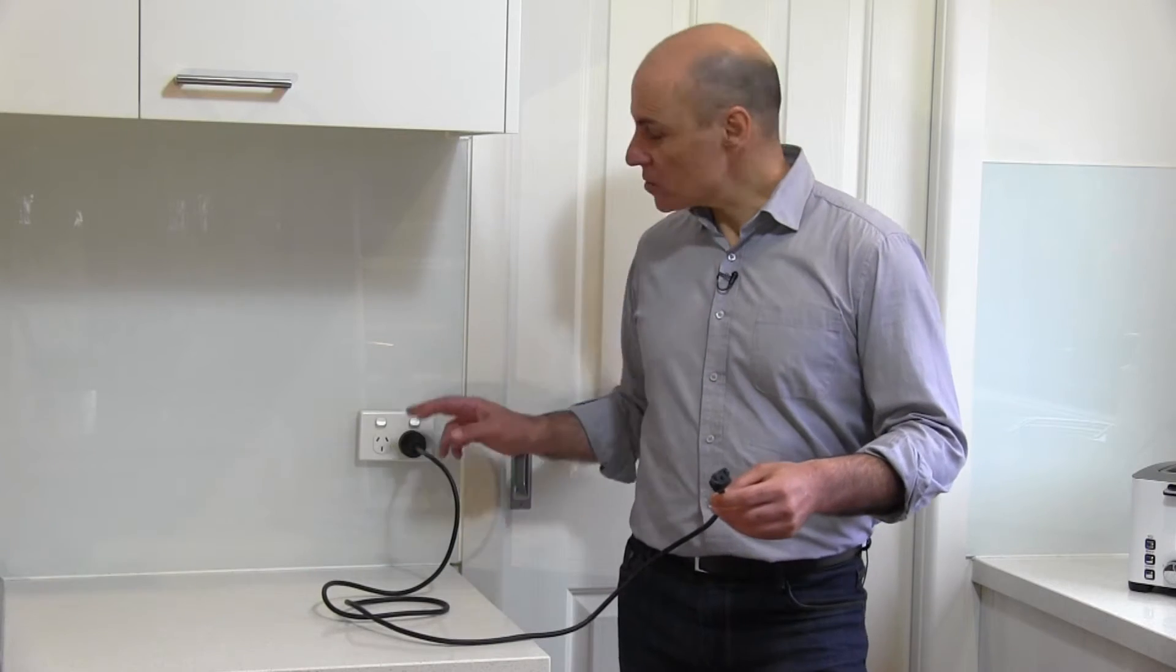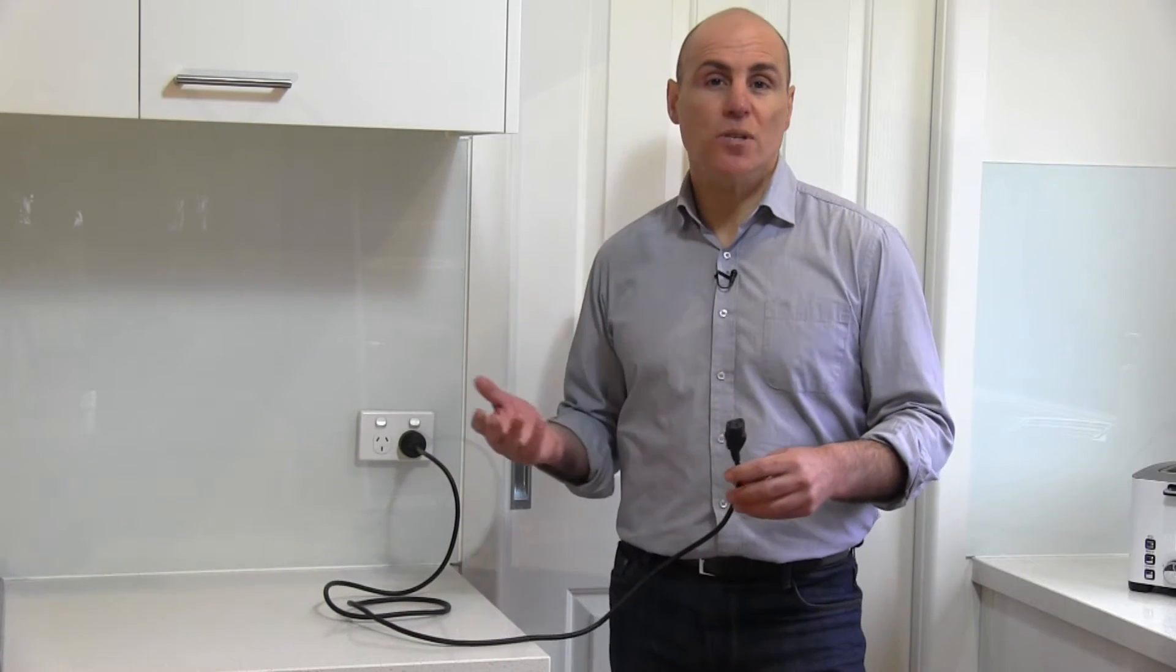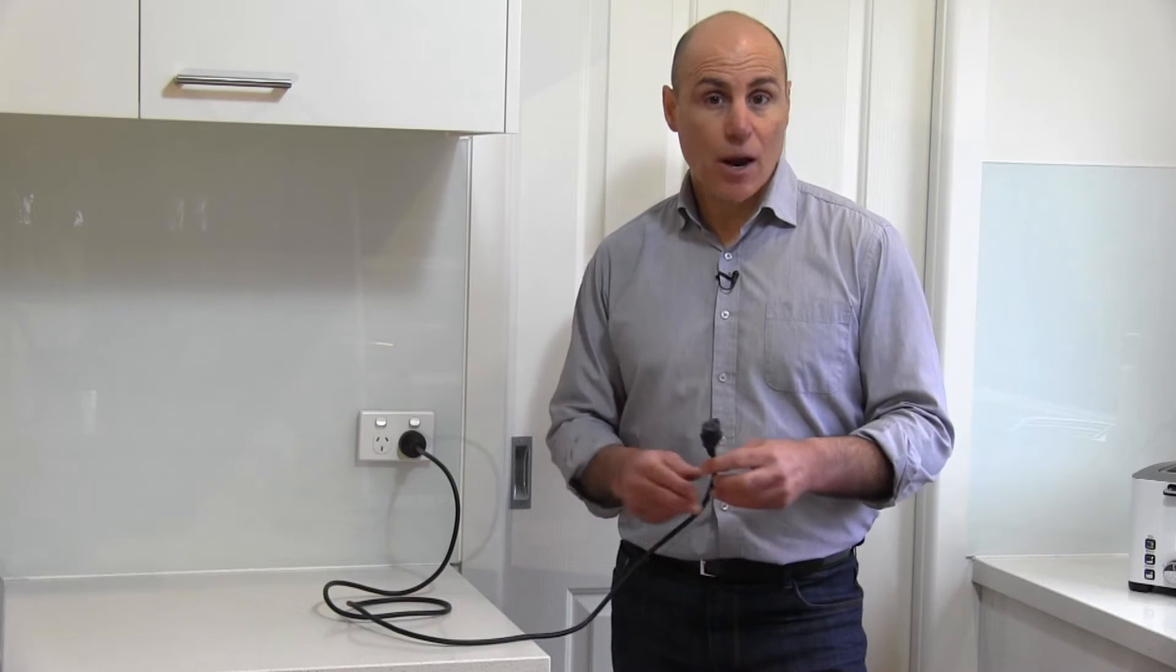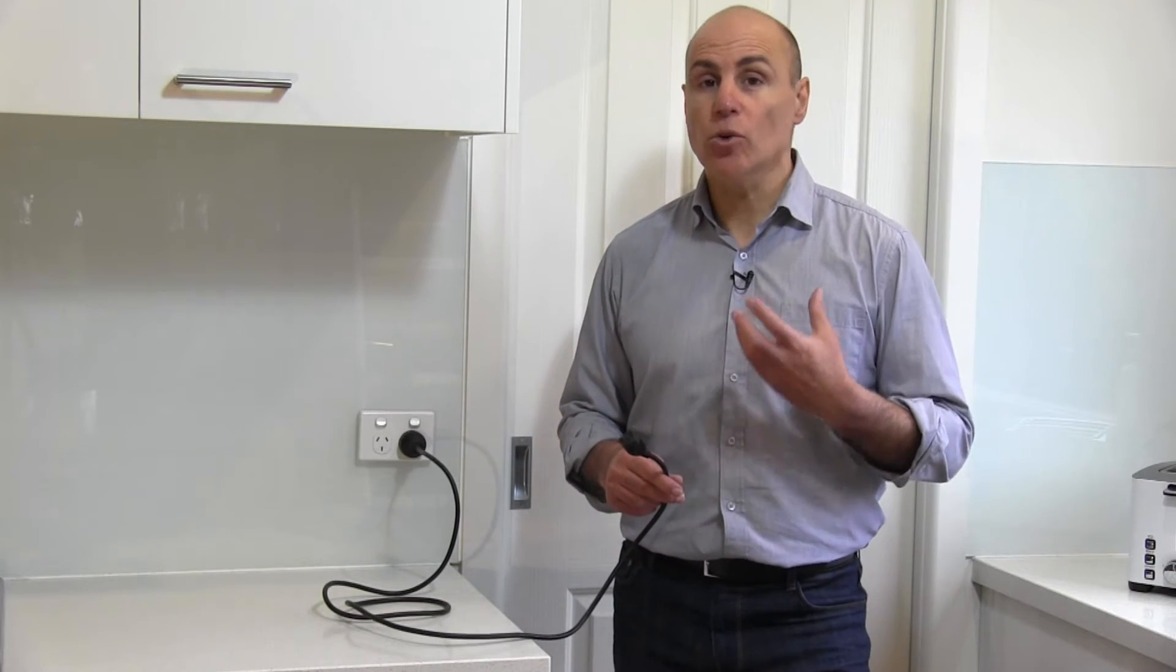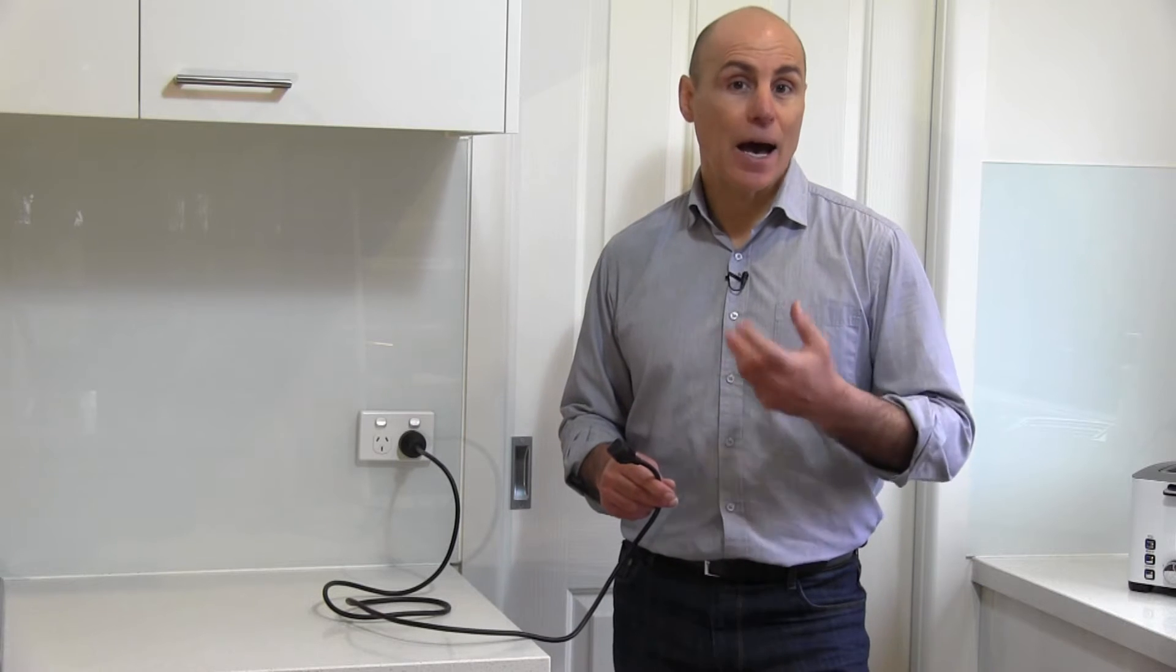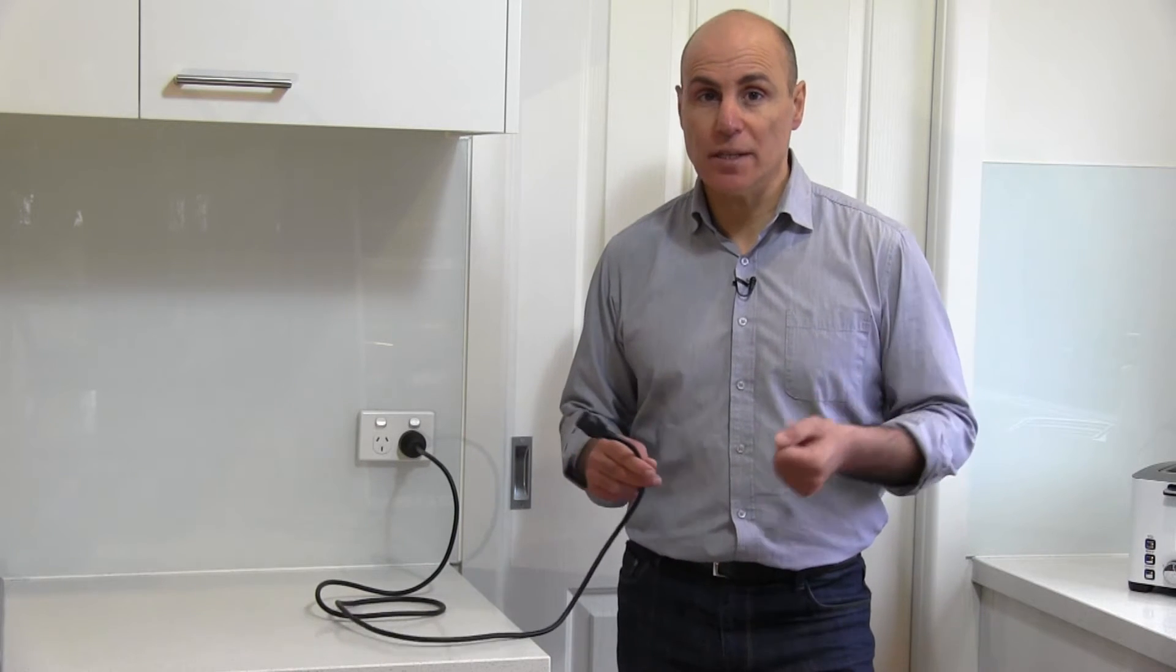240 volts from a mains supply would cause complete paralysis. If the current was running across my chest, the muscles that control my breathing wouldn't be able to function, and my heart, which is a muscle, almost certainly would stop beating.